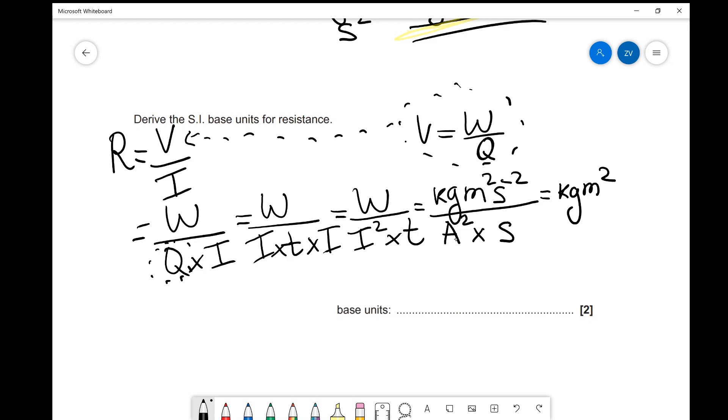So that's going to equal kilograms meters squared. I'm going to bring that A to the top, A to the power of minus 2. The power has flipped now that the amp has gone to the top bit of the fraction. And if I divide s to the power of minus 2, if I divide by another unit of time, I'm actually going to get s to the power of minus 3, which is my final answer. And I can write this over here. So it's kilograms meters squared A to the power of minus 2 s to the power of minus 3.